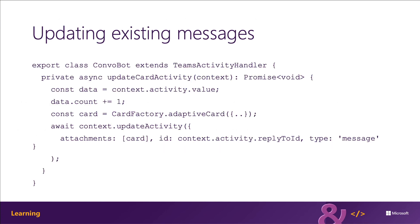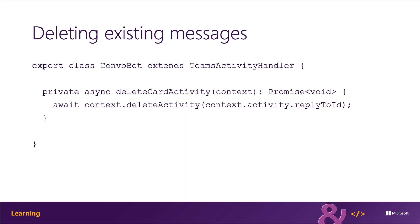Your bot can also update existing messages that the bot created, but not messages created by others. The code shown here on the slide demonstrates how to update an existing message. Notice the reply-to-ID property on the activity that started the turn — you can use the update activity method to update an existing message. In addition, your bot can also handle deleting its own messages, as the code on this slide demonstrates.